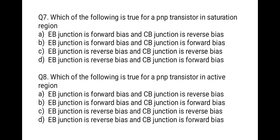The next question is: which of the following is true for a PNP transistor in saturation region? First option: emitter-base junction forward bias and collector-base junction reverse bias. Second option: emitter junction forward bias and collector-base junction forward bias. Third: both junctions reverse bias. Last option: emitter-base reverse bias and collector-base forward bias. In saturation region, a large amount of current flows and the transistor acts like an on-switch. In this region both junctions are forward biased. So the correct option is B — emitter-base and collector-base are both forward biased.